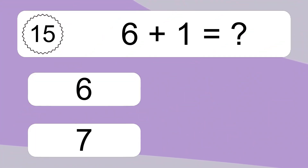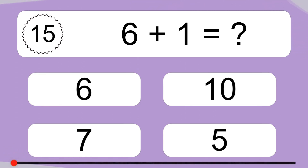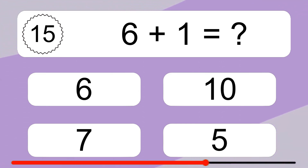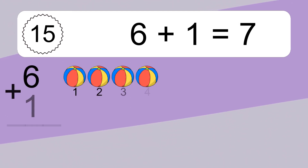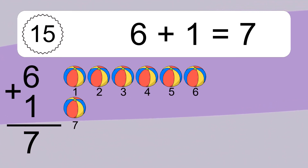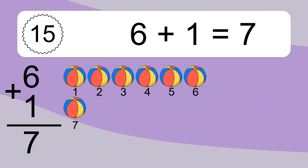Six plus one equals what? Six plus one equals seven. Let's count it: one, two, three, four, five, six, seven.